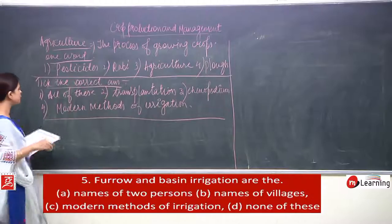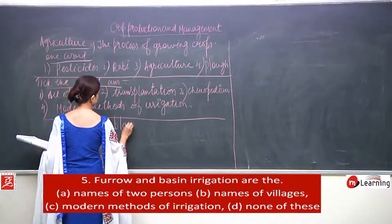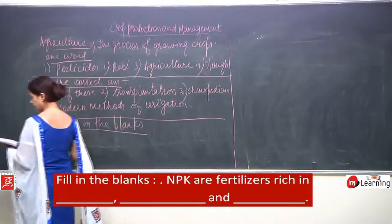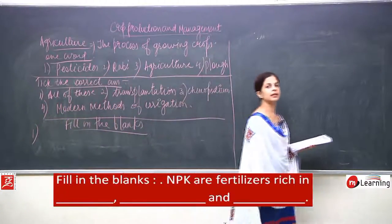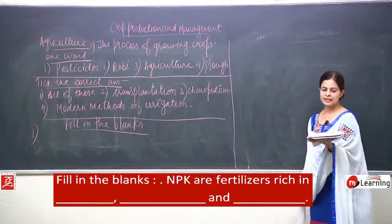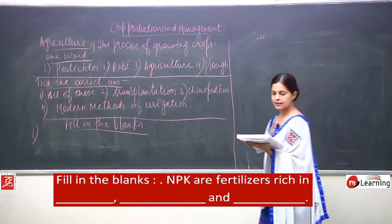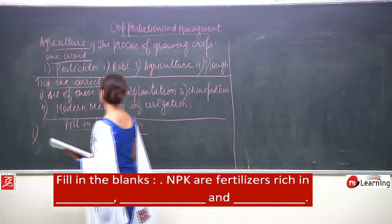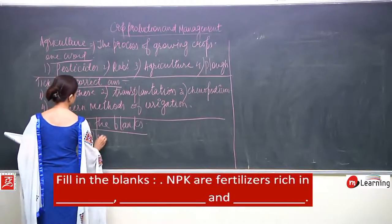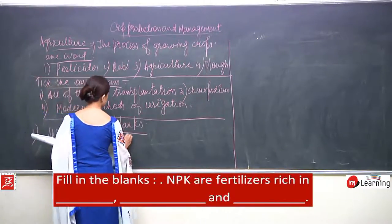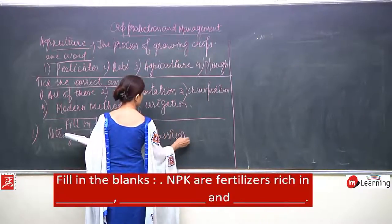Now fill in the blanks. Number 1: NPK are fertilizers rich in — we have studied chemistry, we know the symbols. N stands for nitrogen, P stands for phosphorus, and K stands for potassium.